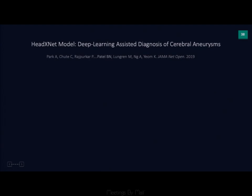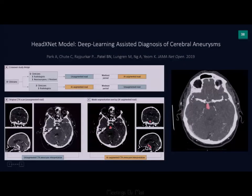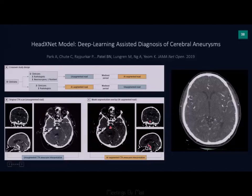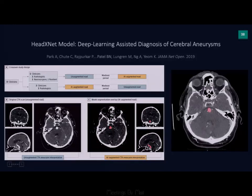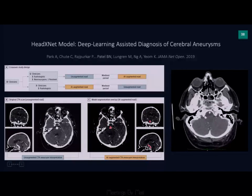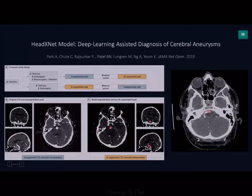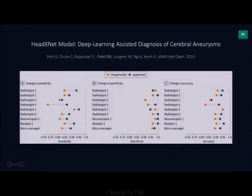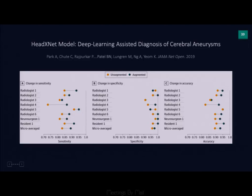We've similarly applied this in other areas — for example, a 3D convolutional neural network for cerebral aneurysm, where the AI model paints areas it suspects are aneurysms, and the radiologist confirms. All radiologists augmented with the AI model performed to the right of the unaugmented group. Note also the wide variability in radiologist performances.